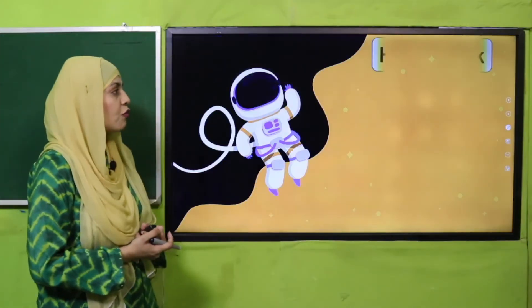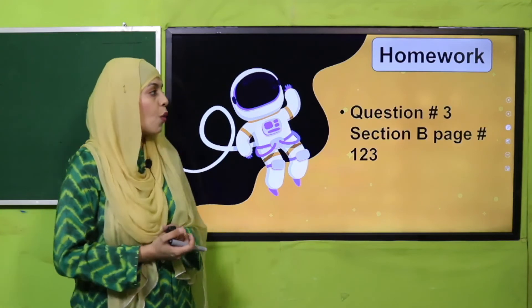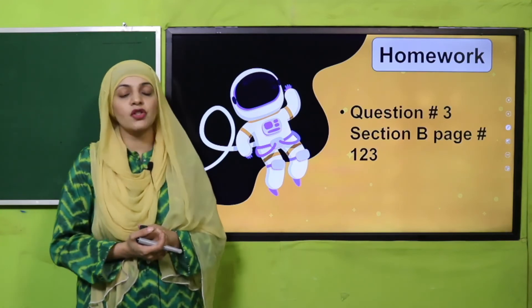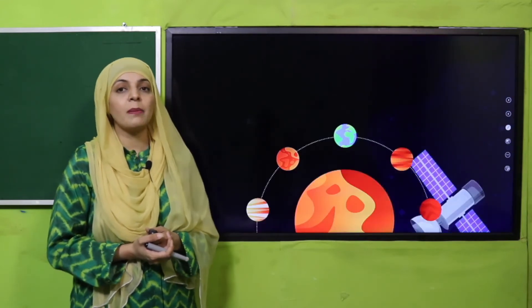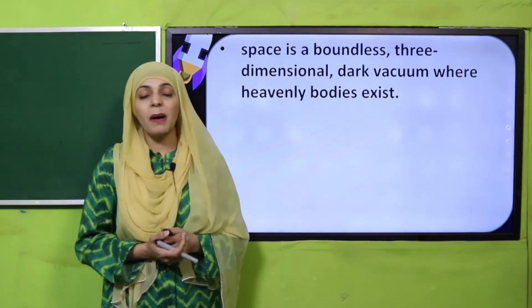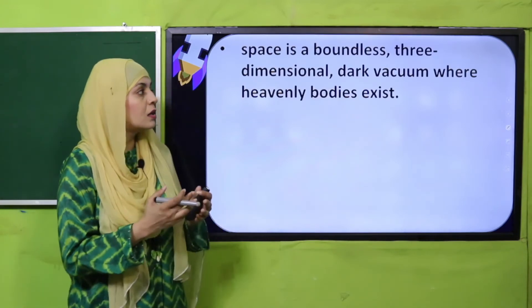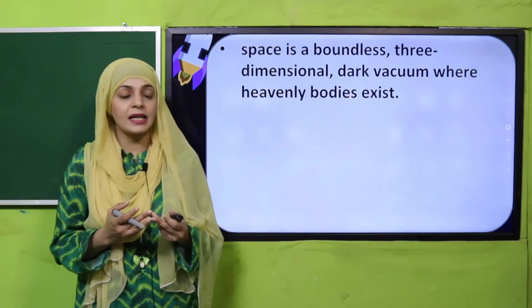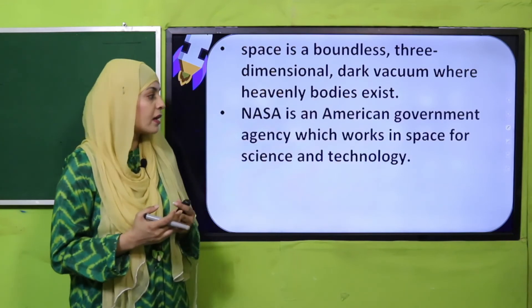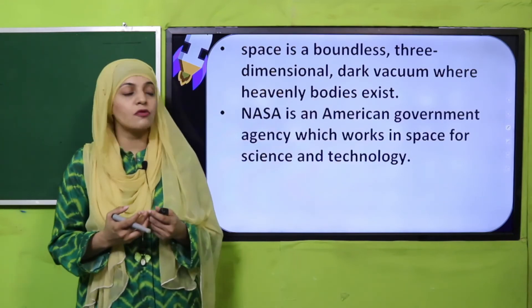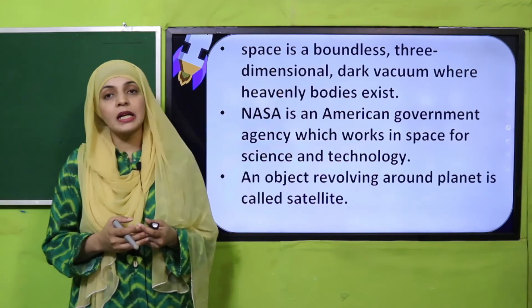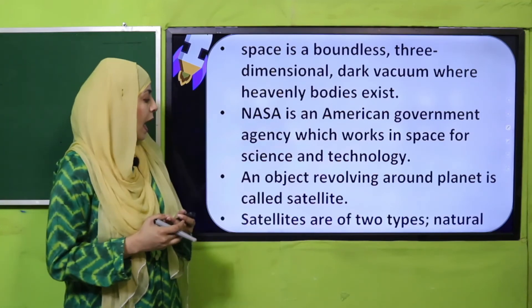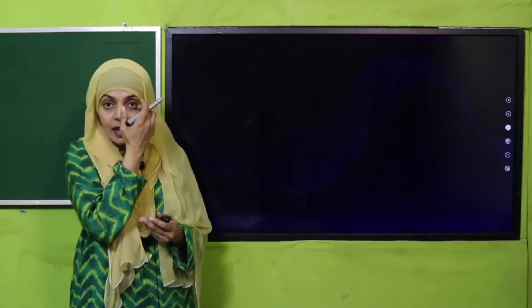For homework, do question number three from section B on page number 123 in your notebooks. In this chapter we have learned that space is a boundless three-dimensional dark vacuum where heavenly bodies exist. NASA is an American government agency which works in space for science and technology. An object revolving around the planet is known as a satellite, and satellites are of two types: natural and artificial.